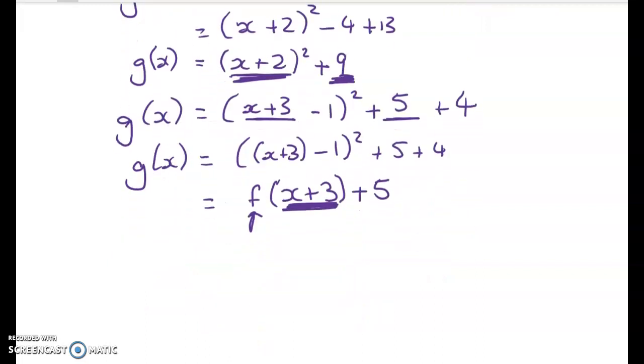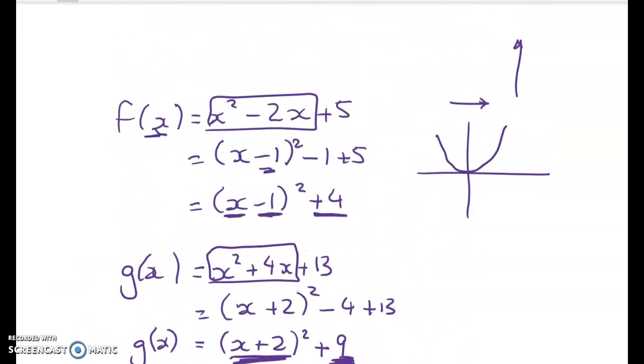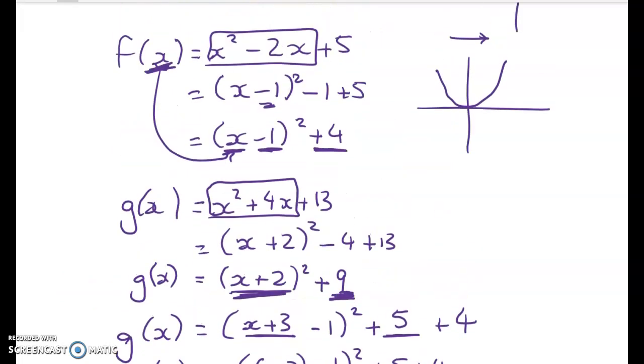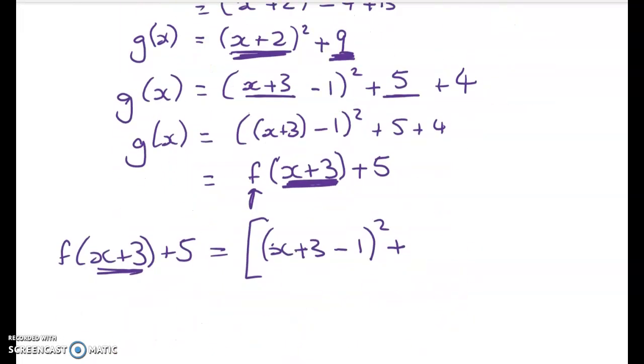Now we can check that back and see if it matches up. What do we get when we go f(x + 3) + 5? For most of you this is probably feeling like overkill, but I think it's worth doing. My f function is take x in and take 1 off it and then square it. So here we're taking x + 3 in and taking 1 off it and squaring it. Then the next part of the f function is to add on 4, and then we're adding on 5. So that gets me (x + 2)² + 9, which is g(x).